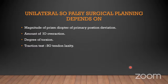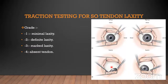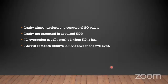The traction test for tendon laxity is performed using two forceps holding the conjunctiva and moving the globe in all directions; the cornea should be exposed downward to any conjunctival fold and should not remain unexposed. Grading: minus one is minimal laxity, minus two is definite laxity, minus three is marked laxity, and minus four is absent laxity. SO tendon laxity almost excludes acquired SO palsy; laxity is not expected in acquired SO palsy. IO overaction is usually marked when SO is lax; always compare relative laxity between the two eyes.